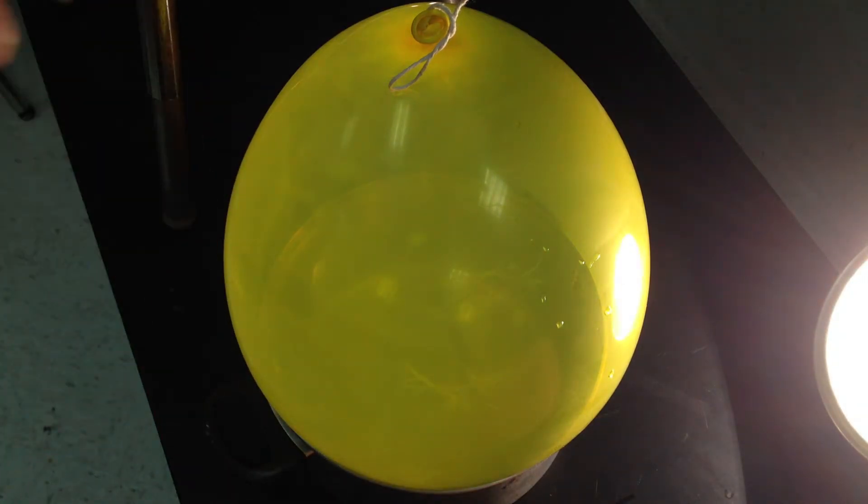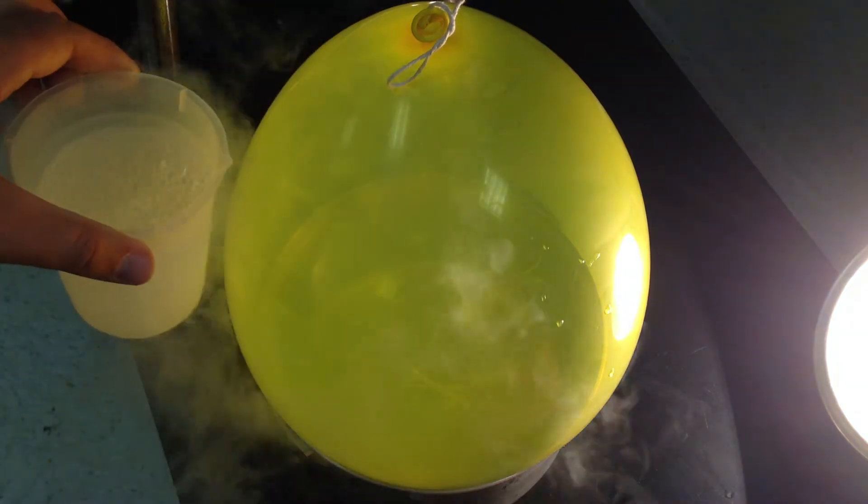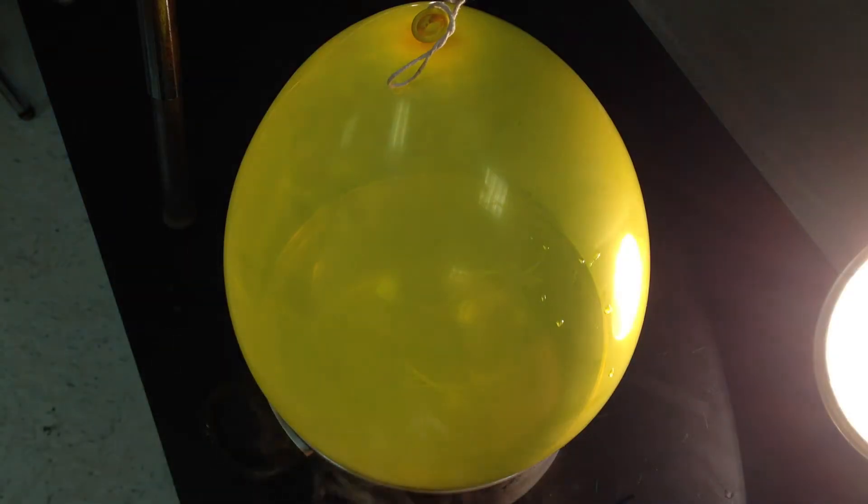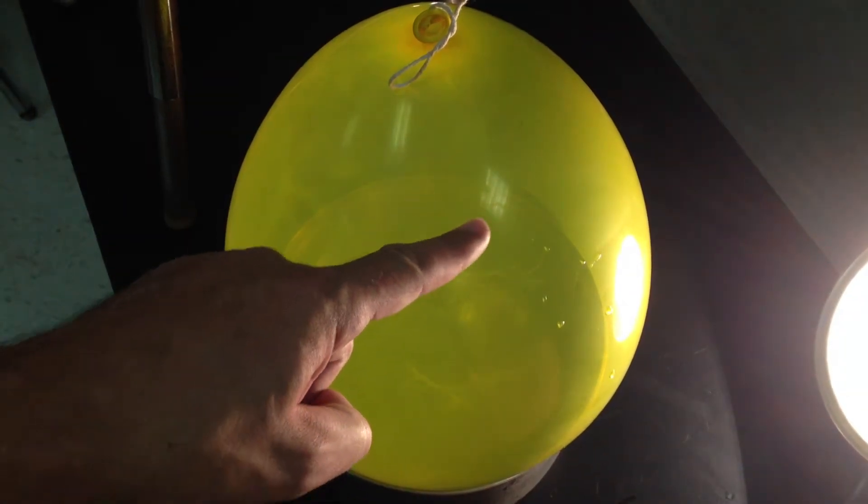Obviously, if you pop it, the air comes out. You can't support that pressure, and it deflates. So what I'm going to try to do is deflate it a different way. I'm going to make the gas molecules slow down with liquid nitrogen. I'll pour some liquid nitrogen on the balloon and cause it to deflate by making the molecules move slower.